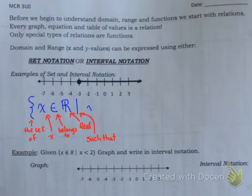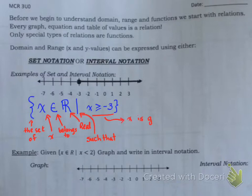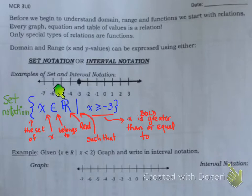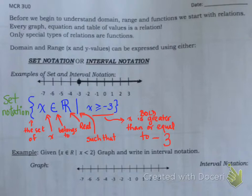This goes on from negative 3 all the way to positive infinity. So how do we write this? We say that all the X values we see on this graph in bold is greater than or equal to negative 3. In words, you will see that X is greater than or equal to negative 3. And this is known as set notation. When you read it, it is the set of all X that belongs to real numbers such that X is greater than or equal to negative 3. Close the bracket.